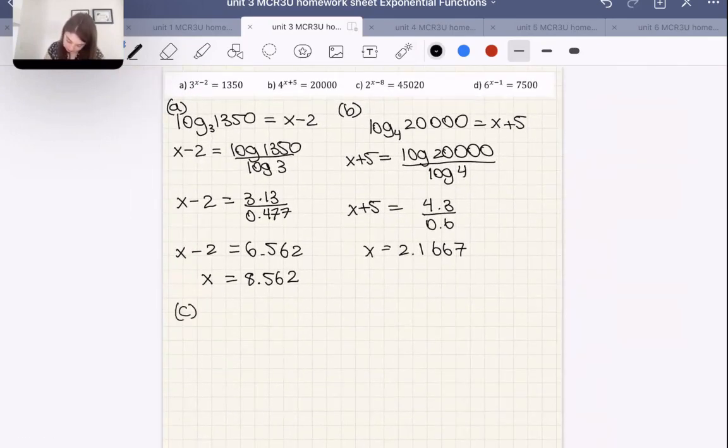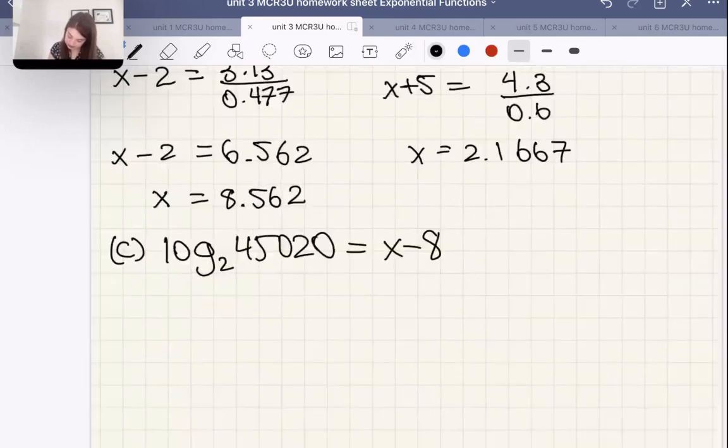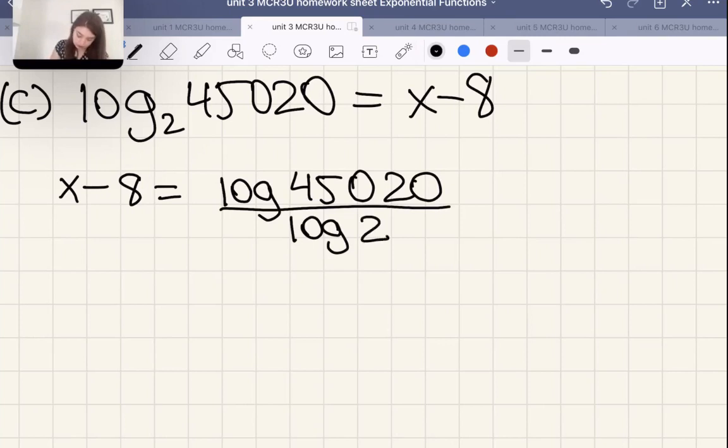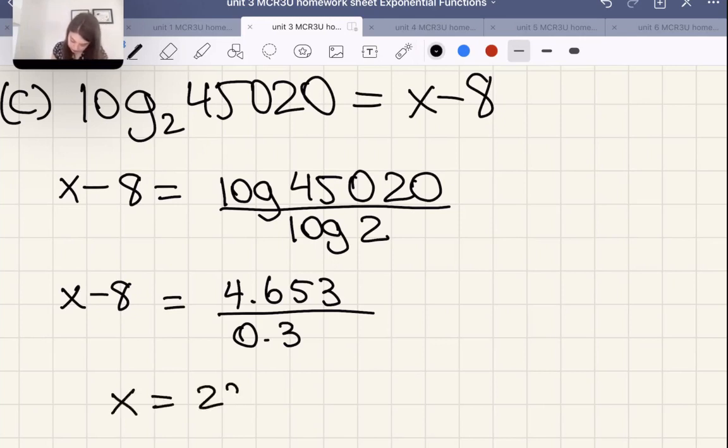Let's do c. c is log with our base 2, 45,020 equals x minus 8. So same steps as before. I know these are very predictable, very repetitive, but that is okay. That is what we want. So, x minus 8 is equal to log 45,020 over log 2. So x minus 8, 4.653 over log 2.3. So that's 4.653 divided by 5.3. And then plus 8, so x would be 23.51. Good.